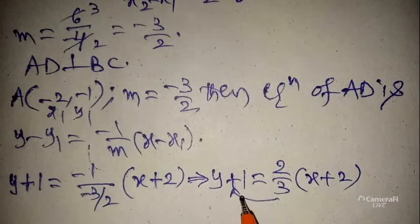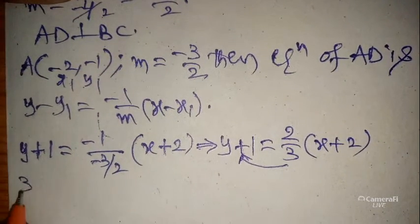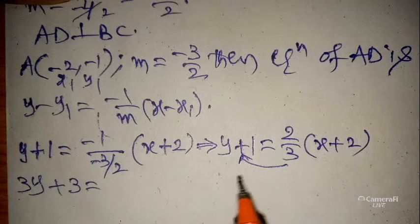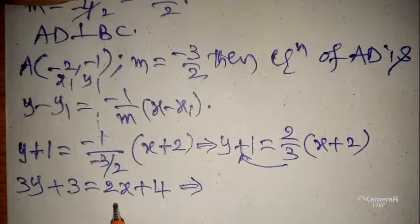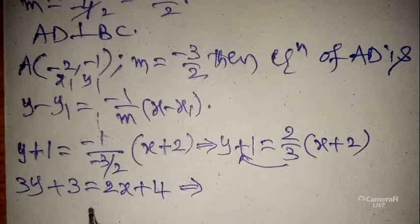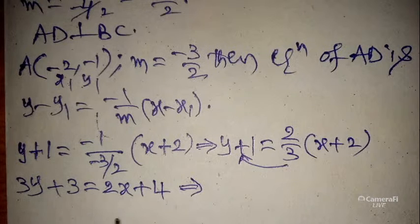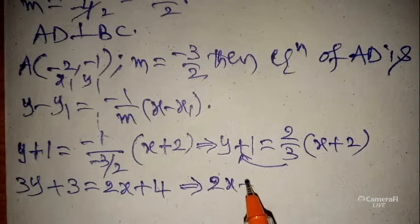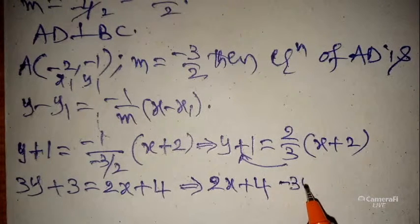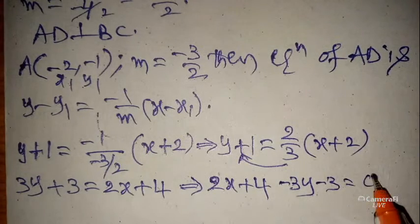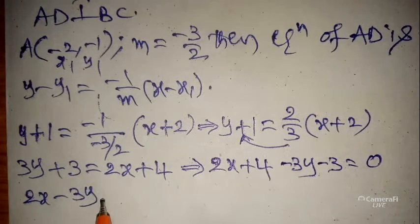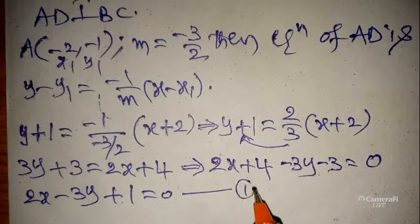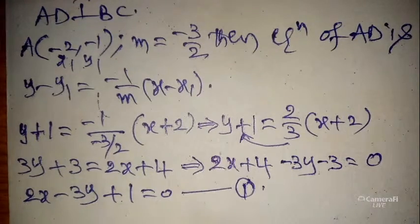Cross multiplying: 3(y + 1) = 2(x + 2), giving 3y + 3 = 2x + 4. Rearranging — since the x coefficient is positive, right-side values move left: 2x + 4 − 3y − 3 = 0, which simplifies to 2x − 3y + 1 = 0. Let this be Equation 1.